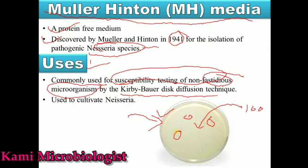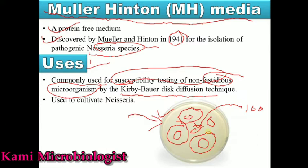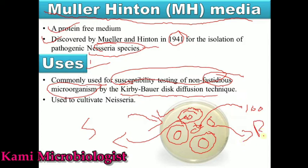After 24 hours you will see the zone of inhibition — areas where no bacterial growth occurs around certain antibiotic discs. Where there is no bacterial growth, that antibiotic is sensitive, meaning effective. Where the zone of inhibition is not formed, that antibiotic has no effect over the bacteria, meaning the bacteria are resistant to that antibiotic. This is called antibiotic profiling: sensitive means effective, resistant means not effective.